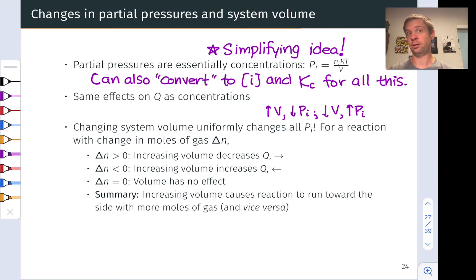Likewise, if I decrease the volume of the system, if I compress the system, all the partial pressures go up uniformly. And so the effect on the position of equilibrium here all depends on how many moles of gas we have on the product side relative to the reactant side and our old friend the change in moles of gas in going from reactants to products.